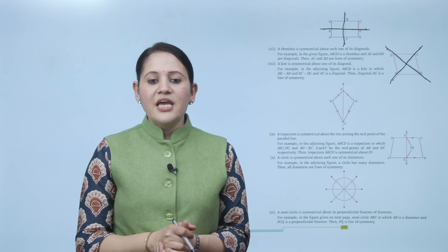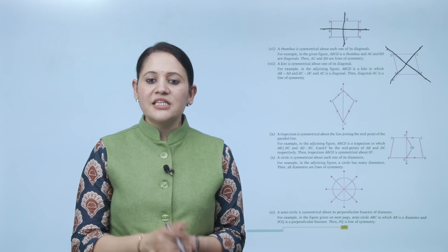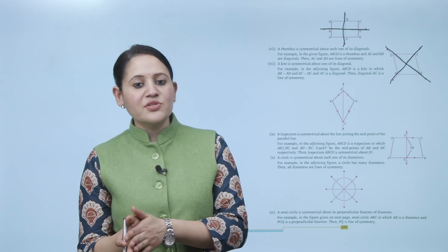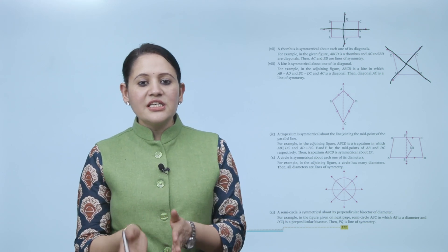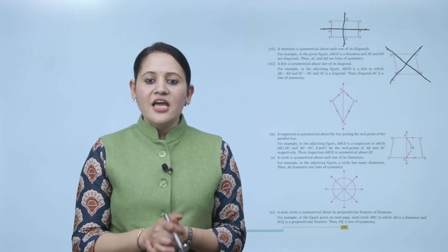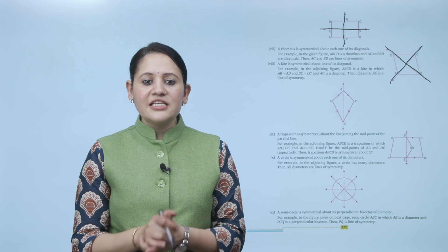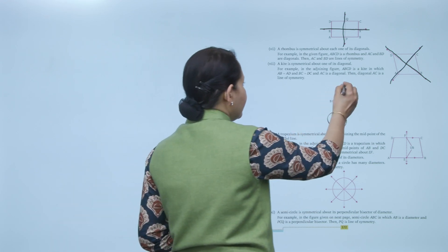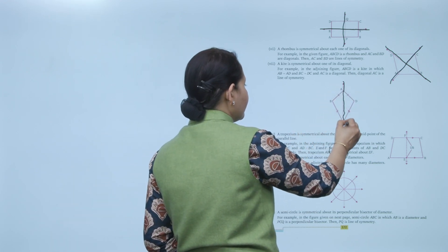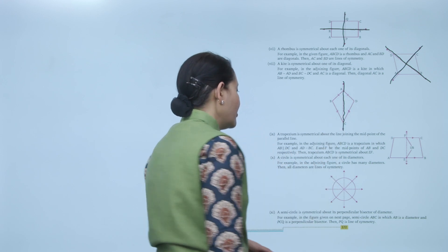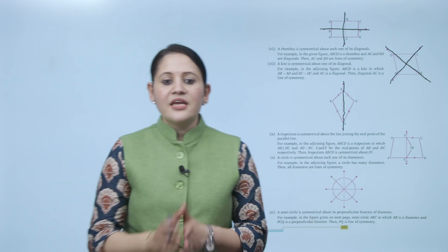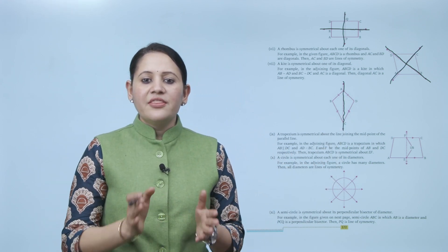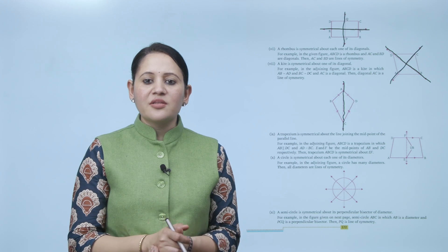For example, in the adjoining figure, ABCD is a kite in which AB equals AD and BC equals DC. AC is the diagonal and the diagonal AC is the line of symmetry. This line is the line of symmetry for the kite.